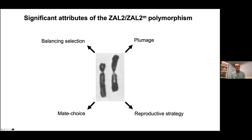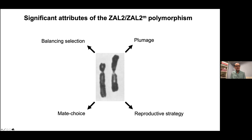This is an example of balancing selection — essentially maintaining variation in the population. In the seed eater speciation event, you're pushing populations apart. In this case with the white-throated sparrow, you're trying to keep that variation in one population. It's connected to plumage, reproductive strategy, and mate choice — a very interesting genetic system to understand what's driving those differences on a genetic basis.